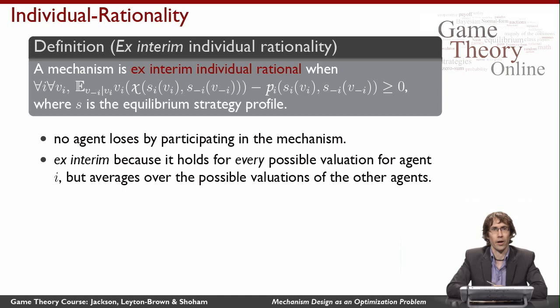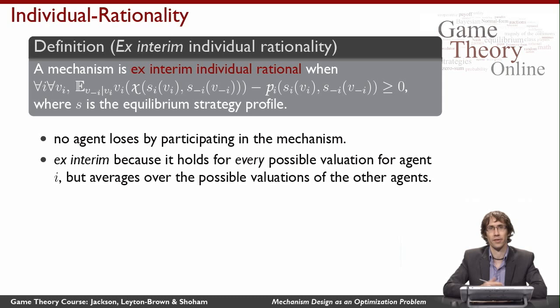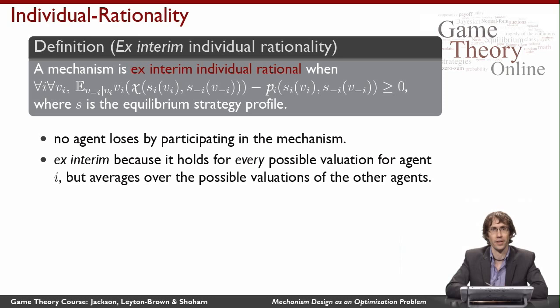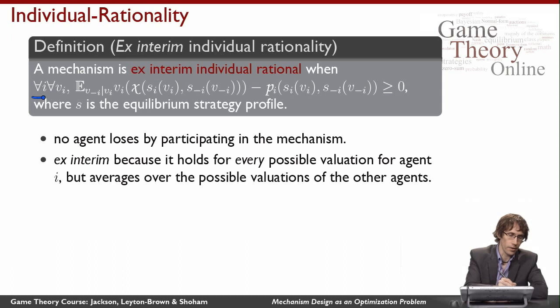Here's yet another constraint: individual rationality. The idea is that I want to encode the notion that agents might have a choice about whether to participate in the mechanism. Formally they just have to choose some action, and payments get imposed on them. But in practice, we might want a condition saying agents actually would have liked to choose to be part of this mechanism — their expected utility for participating is no worse than their expected utility from staying at home, i.e., their expected utility is weakly positive.